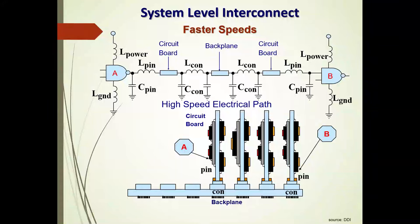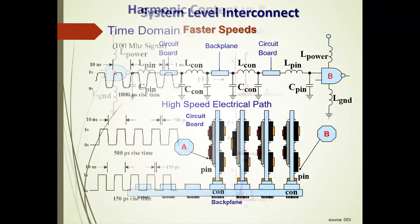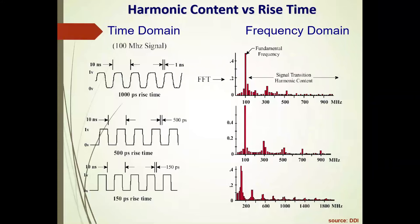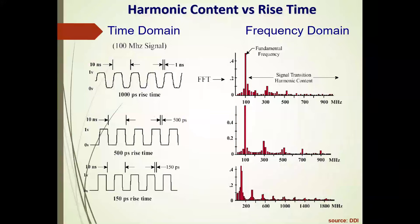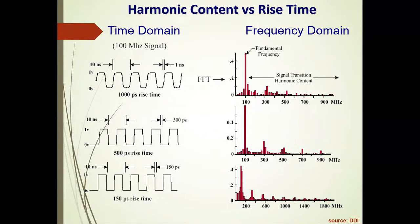With slower rise times we could ignore these parasitics, but today we cannot. Managing all of these parasitics is essentially the core of signal integrity. A square wave doesn't really exist in nature — it's made up of many fundamental frequencies and harmonics. As rise and fall times drop from one nanosecond to 150 picoseconds or smaller, the harmonic content extends out to 1800 MHz, producing all kinds of potential signal integrity issues, which is what we'll discuss today.